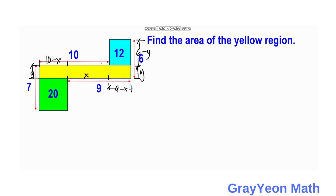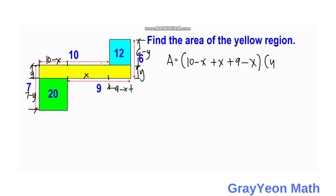The height of the green should be 7 minus y. Since we are interested in finding the area of the yellow rectangle, the area is equal to the sum of the lengths: (10 minus x) plus x plus (9 minus x), times the height y. We can cancel x terms, giving us area equals (19 minus x) times y.